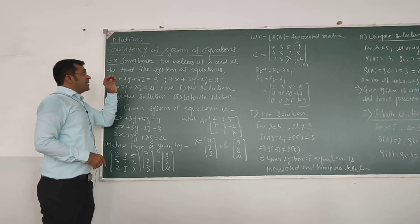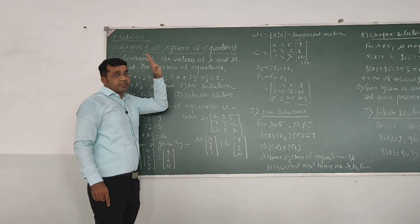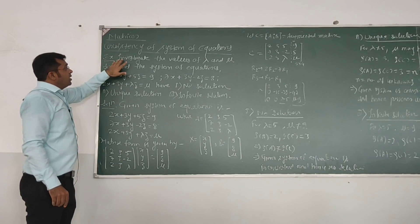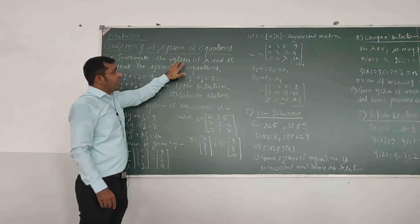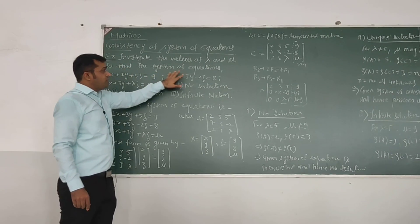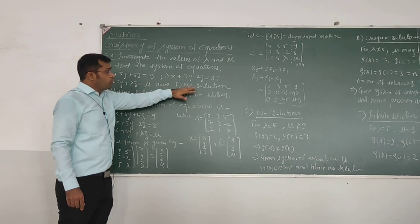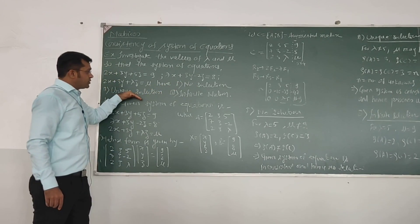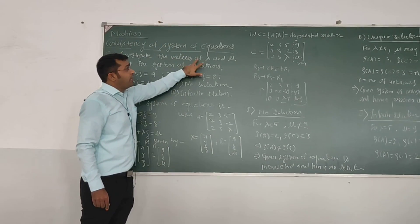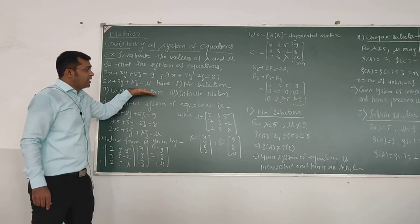Today we are seeing the topic of matrices — specifically the consistency of a system of equations. This is a very important and famous question in matrices: investigate the values of lambda and mu such that the system of three equations has no solution, a unique solution, and an infinite solution. We have to find for what values of lambda and mu we get these three outcomes.